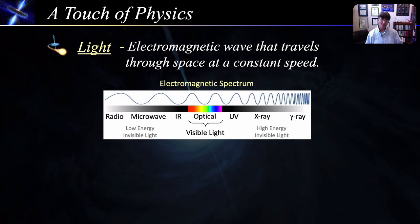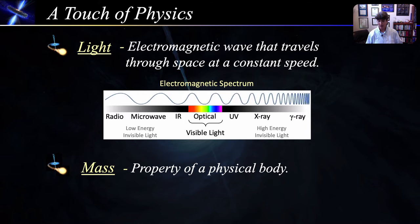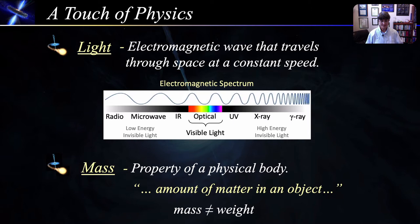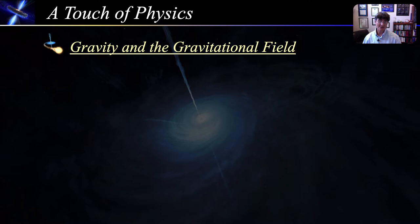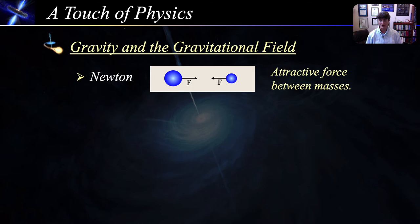The next concept is mass. Mass is a physical property of a body. It can be thought of as the amount of matter in an object. So, the more matter an object has, the more massive it is. Now, mass is not equal to weight. Weight is actually the force of gravity acting upon a mass. That's why we weigh less on the moon, but our mass remains the same.